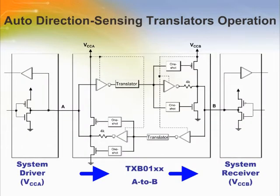Operation of a single channel of a TXB01XX device is shown on the slide. The system is transmitting a high signal from the A side to the B side. The high signal referenced to VCCA on the A side gets translated to a high signal referenced to VCCB on the B side. The output one-shot helps speed up the output slew rate and thus improve the data rate capability of the device.